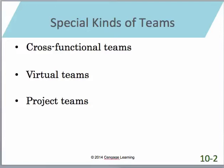The third special team type is a project team — simply a team created to complete one specific task. They're given a goal and one specific task, and once they accomplish it over a certain period of time, the team disperses. For example, a project team might be responsible for hiring a new employee. You bring together people, give them the task, they hire the person, and then the team disperses.